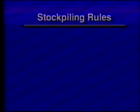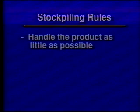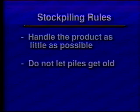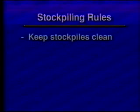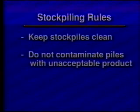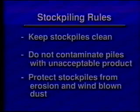Basic rules to follow in stockpiling include: handle the product as little as possible to limit segregation, degradation, and contamination; do not let piles get old — always ship the oldest material first; old piles are subject to erosion and contamination; deplete existing and form new stockpiles rather than replenishing old piles; note that maintaining a tunnel recovery system is not replenishing an old pile; keep stockpiles clean by maintaining areas around piles and equipment; do not contaminate piles with an acceptable product; provide controls for rejection of unsuitable material from the processing plant; and protect stockpiles from erosion and wind-blown dust.